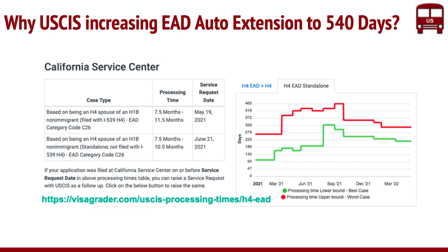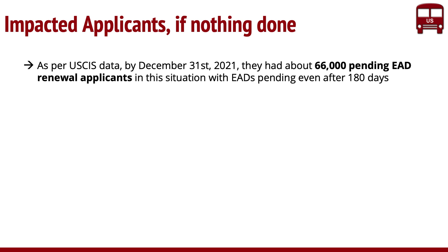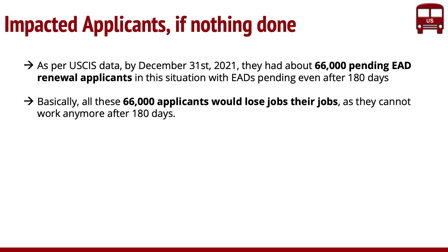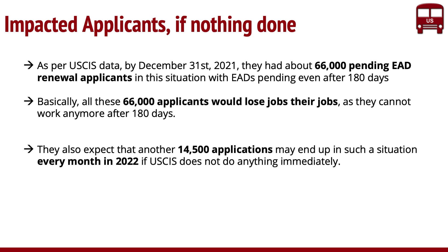Overall, this is one of the reasons they're doing it. As per the data, about 66,000 pending EADs were there even after 180 days as of December. All of those 66,000 people will lose their jobs if nothing is done. Second, they also expect about 14,500 EADs expiring every month in 2022. That's quite significant because EADs are not just for H4 and L2s — they are also given for asylum holders, adjustment of status, and many other types. The idea is it's going to impact a lot of people. In comparison, in 2020 it was less than 3,000, so it's a big surge.